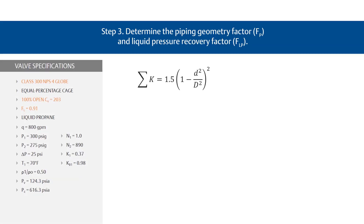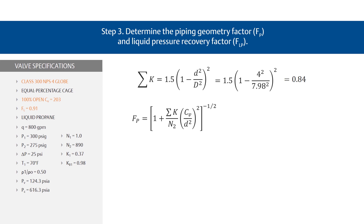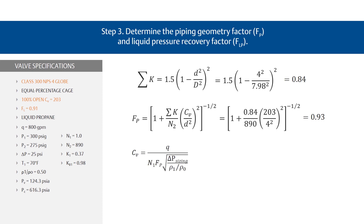Recalculate F sub P in Step 3 using an assumed CV value of 203. First, find a new sigma K value using the equation and plug in your variables for a new sigma K value of 0.84. Now recalculate F sub P using this new sigma K value for a new F sub P value of 0.93. Enter this value back into the CV equation from Step 5 for a new CV of 121.7.